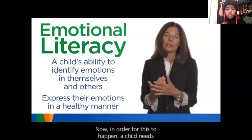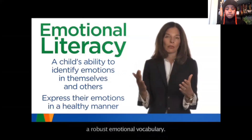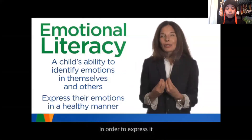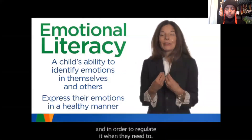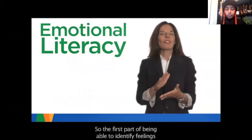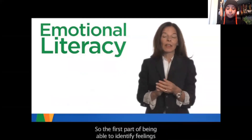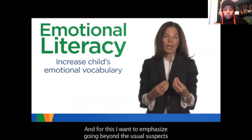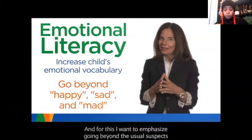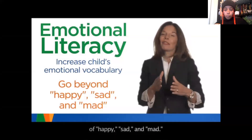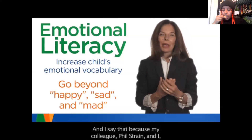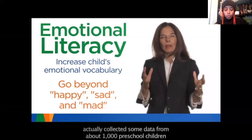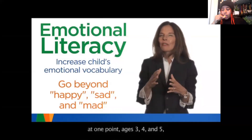In order for this to happen, a child needs a robust emotional vocabulary — they need the name for an emotion in order to express it and in order to regulate it. The first part of being able to identify feelings in themselves and in others is to increase a child's emotional vocabulary. We want to emphasize going beyond the usual suspects of happy, sad, and mad. My colleague Phil Strain and I collected data from about a thousand preschool children, ages three, four, and five, and actually measured their emotional vocabularies.